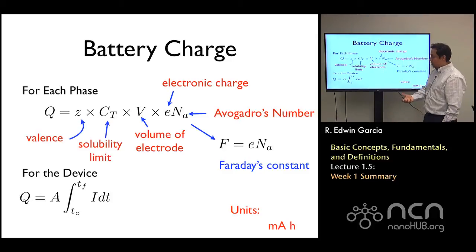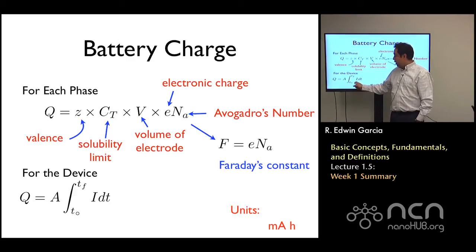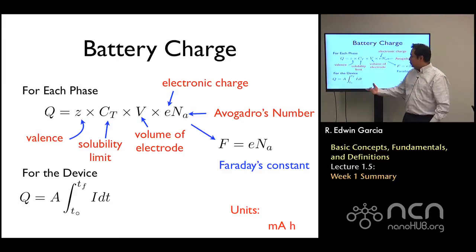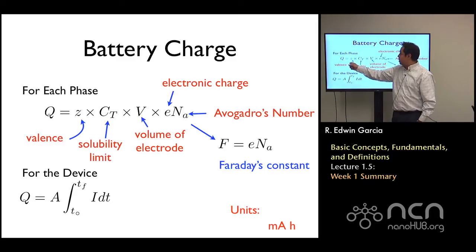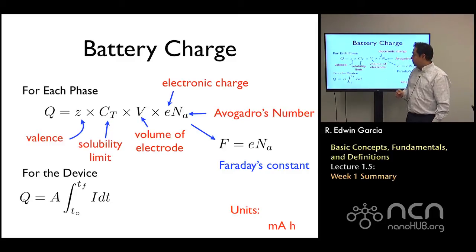We can relate that to the charge that we extracted from the actual device by integrating over time the current density, that is how many amps per meter squared we're getting across the discharge time, multiplying it by the area. So if we do this at a very small current density for a highly dense material, we should be able to get a number that is very close to the total charge of the system, because the losses that the system will have can be neglected.